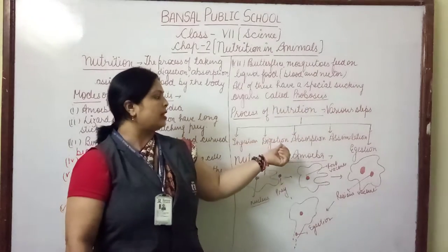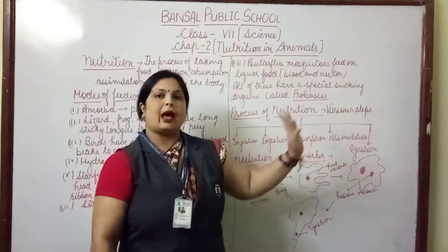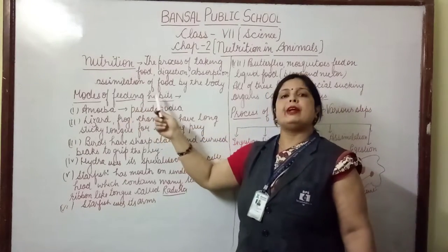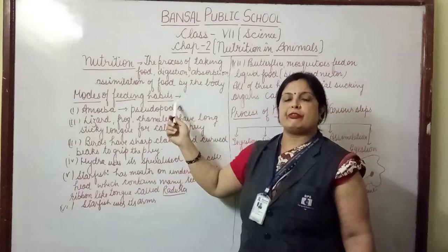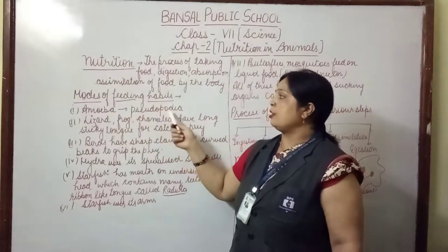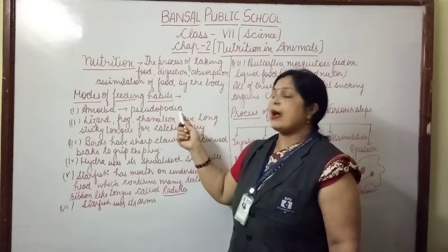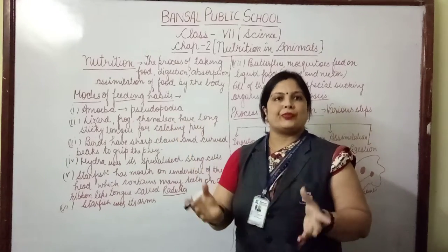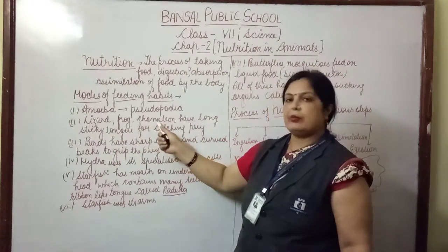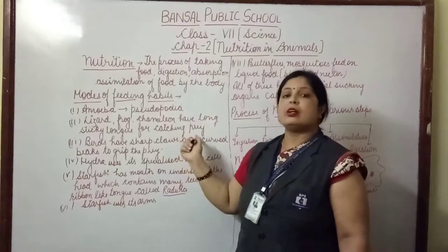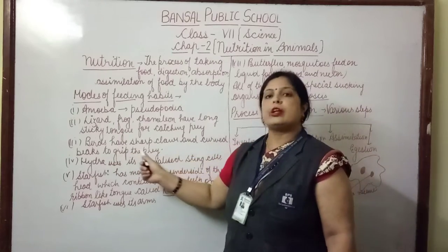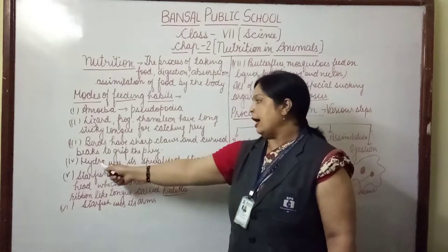Now, what are the different modes of feeding habits? Amoeba obtains its food from its surroundings by pseudopodia — pseudopodia are false feet which have a cup-like structure. Lizards, frogs, and chameleons have long sticky tongues for catching prey. Birds have sharp claws and curved beaks to grip their prey.